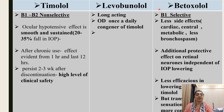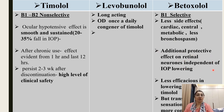Betaxolol is a beta-1 selective drug with fewer side effects due to its selectivity, but it has less ocular hypotensive effect because beta-2 receptors are present on the ciliary epithelium. However, it also causes less systemic side effects like adverse metabolic effects and bronchospasm. It has an additional protective effect on retinal neurons independent of IOP lowering, but is less efficacious compared to timolol.